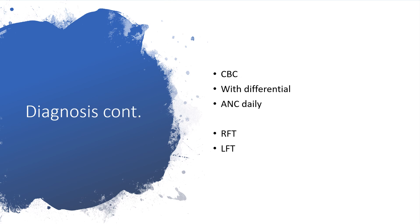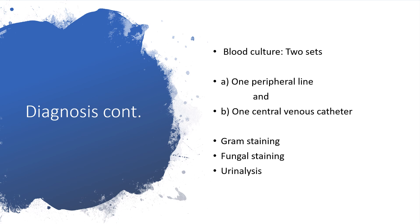After history and physical examination, we head to the lab. A complete blood count with differential and absolute neutrophil count should be done daily, calculated using the formula given earlier. We also perform renal function tests and liver function tests. Blood cultures should be taken — two sets of samples, one from a peripheral line and another from a central venous catheter — for gram staining, microscopy, culture and sensitivity, and fungal testing. Urine should also be taken for urinalysis and microscopy, culture and sensitivity.